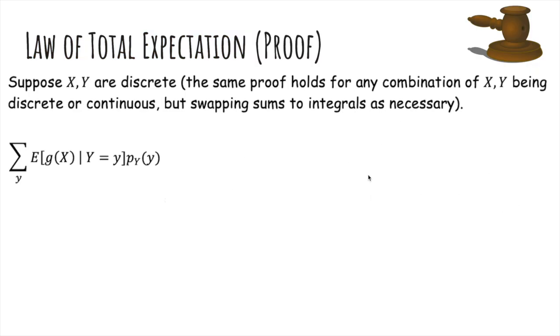So now let's prove it. So for the case where they're both discrete, if I have this formula here, it turns out, remember that formula for E[g(X)|Y=y] is the sum over x of g(x) times the probability of X equals x given Y equals y.